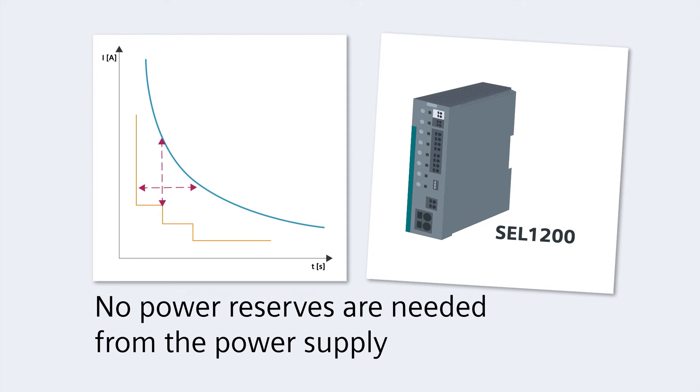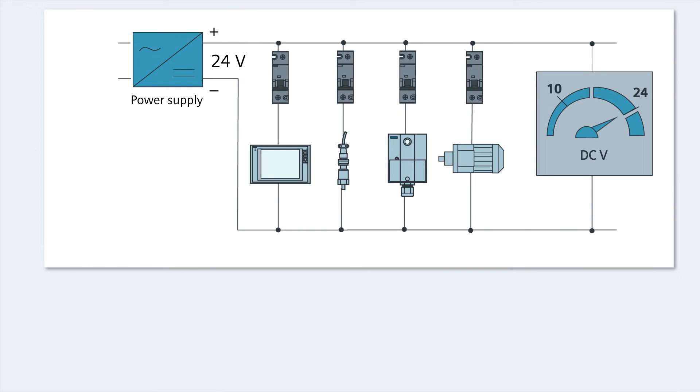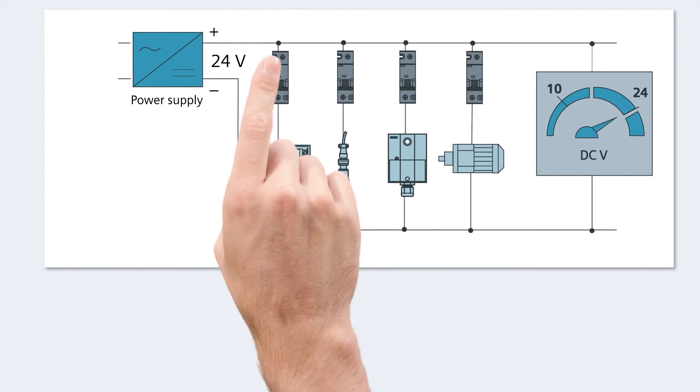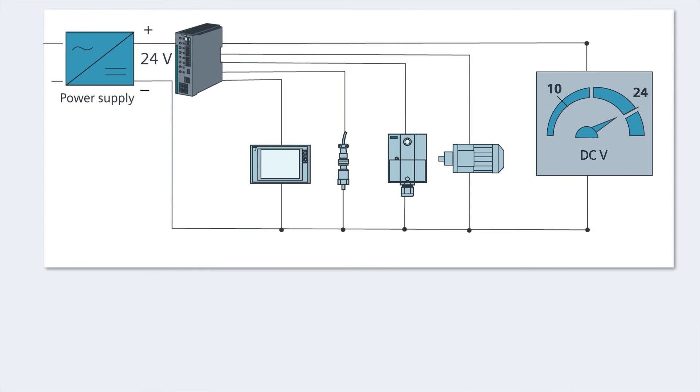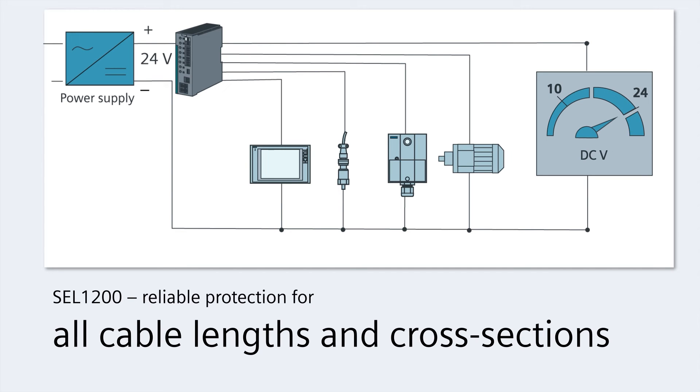Now let's look at the SEL1200 in an application example. Whereas traditional miniature circuit breakers have to be specially adapted to each load circuit, it's not necessary with the CTOP selectivity modules, because they safely and reliably protect the connected loads, regardless of cable length or cross section.